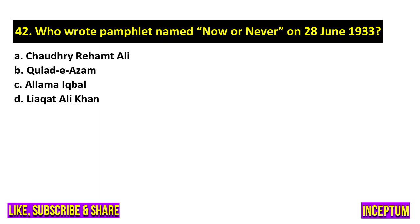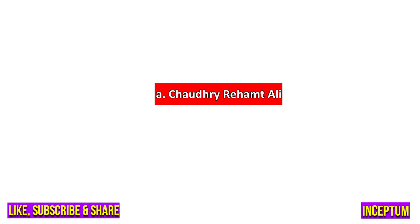Question number 42. Who wrote the pamphlet named 'Now or Never' on 28th June 1933? In the options we have Chaudhary Rahmat Ali, Quaid-e-Azam Muhammad Ali Jinnah, Allama Iqbal, Liaquat Ali Khan. And the right one is option A, Chaudhary Rahmat Ali.